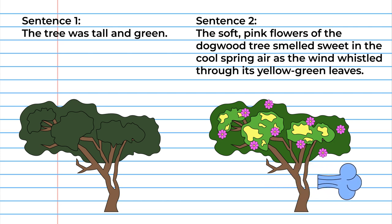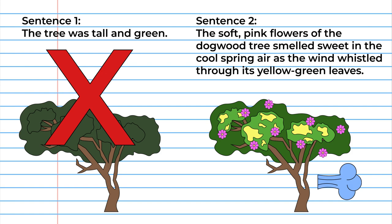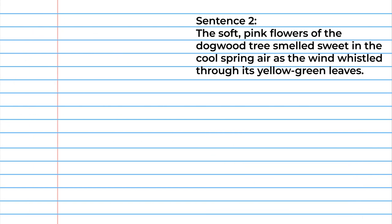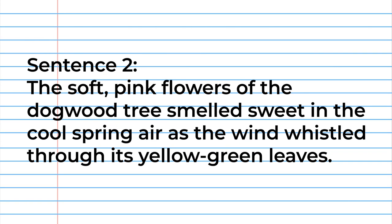Sentence 1 does not really appeal to the senses. Sentence 2 is more descriptive. It appeals to our senses by describing the flowers as soft and pink, the smell as sweet, the air as cool, and the wind as whistling. It paints a picture so that we can imagine the scene.